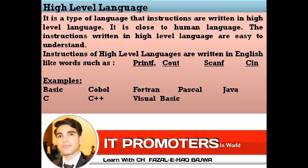What is high-level language? High-level language is a type of language in which instructions are written in a form close to human language. It is easily understood by humans. The instructions of high-level languages are written in English-like words — for example, PrintF, Cout, ScanF, and C.